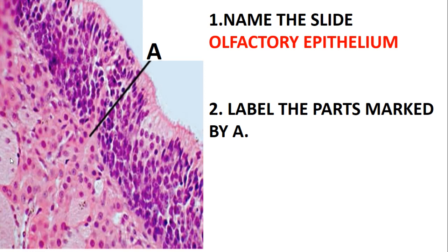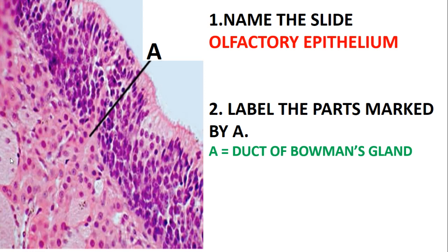Before looking at the part marked by A, we need to understand that the olfactory epithelium is similar to the pseudostratified epithelium, except that the olfactory epithelium does not have the complete cells. Make sure you are able to differentiate the two. The part marked by A is just the duct of the Bowman's gland.